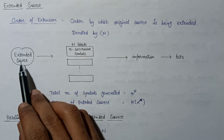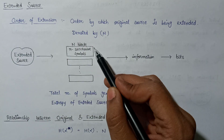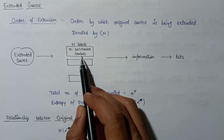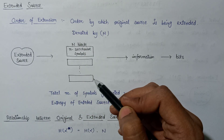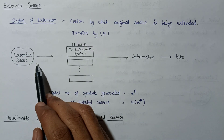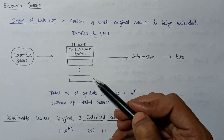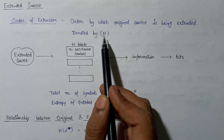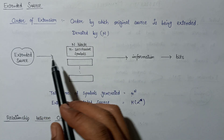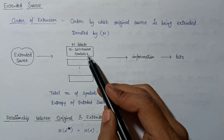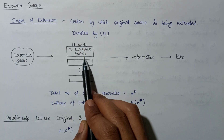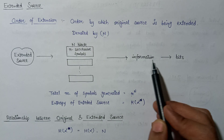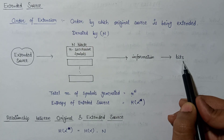This source is called an extended source because while the original source generates n number of symbols, the extended source generates N blocks of symbols, with each block consisting of N successive symbols. It therefore generates far more symbols compared to the original source. Each symbol in these blocks contains some information content represented in the form of bits.